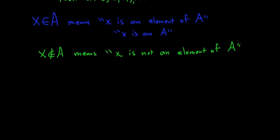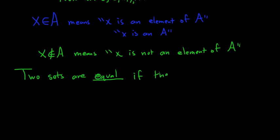Two sets are equal if they have the same elements. This is very important — two sets are equal if they have the same elements.